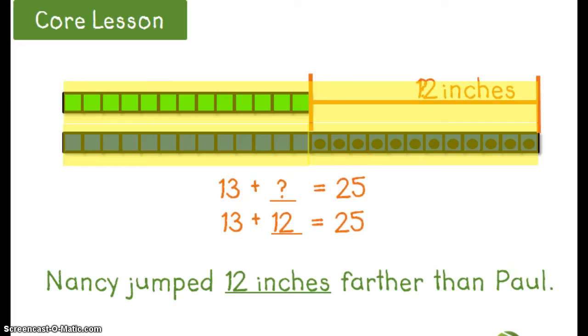Another way I could have solved the problem is using the related fact. I could have started with 25 and subtracted 13 to find the difference of 12. Either way, I would still have the same answer that Nancy jumped 12 inches farther than Paul. Does this look familiar to you? I'm hoping that you are remembering this called the bar model when you were solving your word problems back in Unit 4.